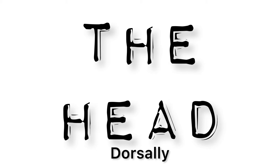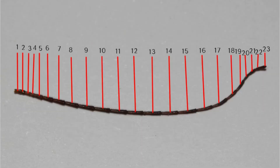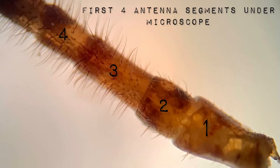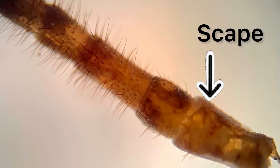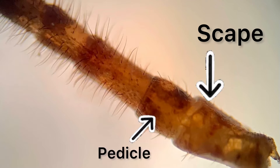Now let's get into more descriptive details about the dorsal external view, starting from the head. Each antenna has 23 segments, some smaller than others, with the first and last four segments being the smallest. The whole antenna is on average 4.5 centimeters in length. The first segment of the antenna is called the scape, which is mounted into a specialized socket enabling the insect to move the antenna as a whole. The second segment is called the pedicel, and this very small segment contains Johnston's organ, which is a collection of sensory cells that detects motion in the flagellum.